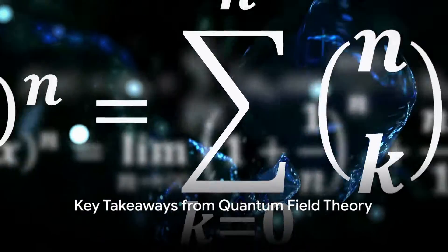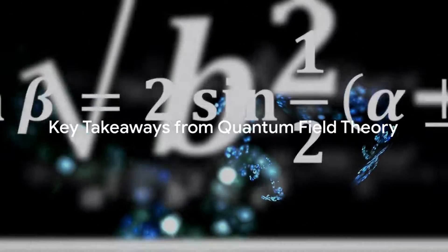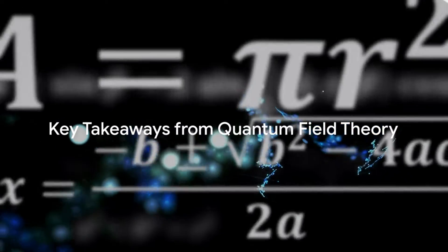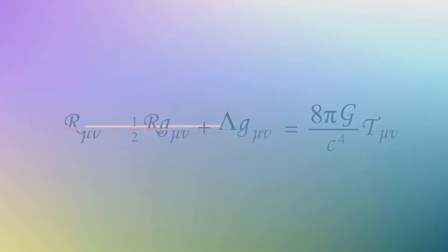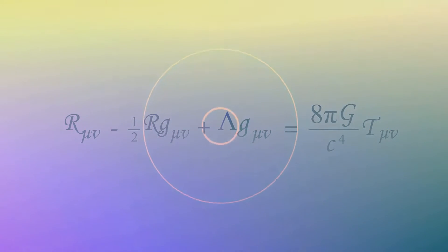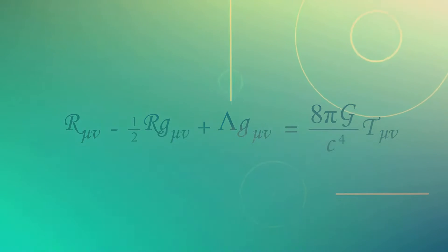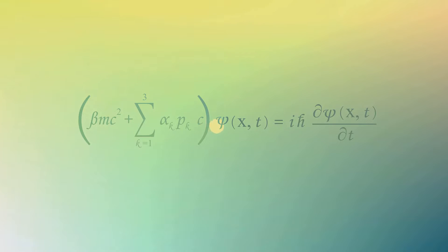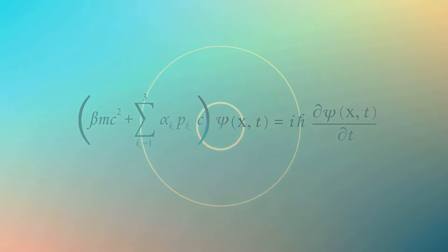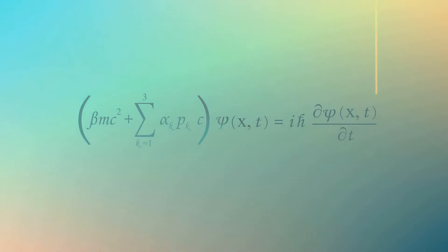So, what are the main takeaways from quantum field theory? Firstly, the universe is filled with quantum fields, and it's the ripples in these fields that we perceive as particles. Secondly, particles interact through the exchange of force-carrying particles, which mediate the fundamental forces of nature. And finally, the existence of virtual particles — fleeting and elusive, yet with tangible effects — highlights the strange and counterintuitive nature of the quantum world.